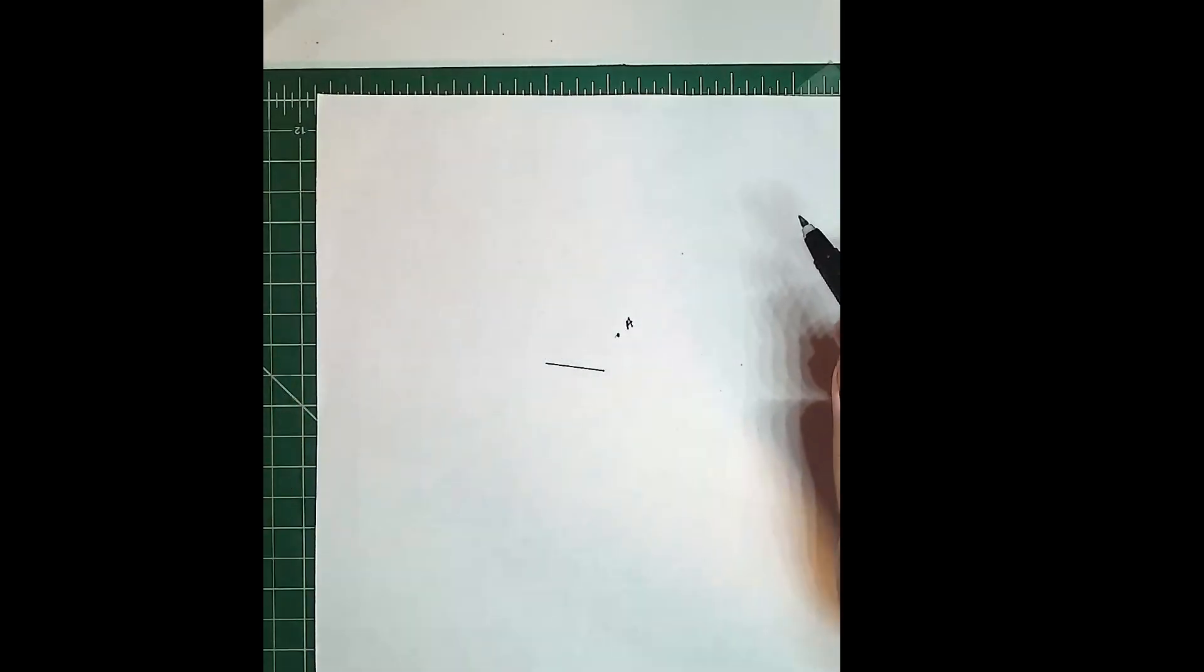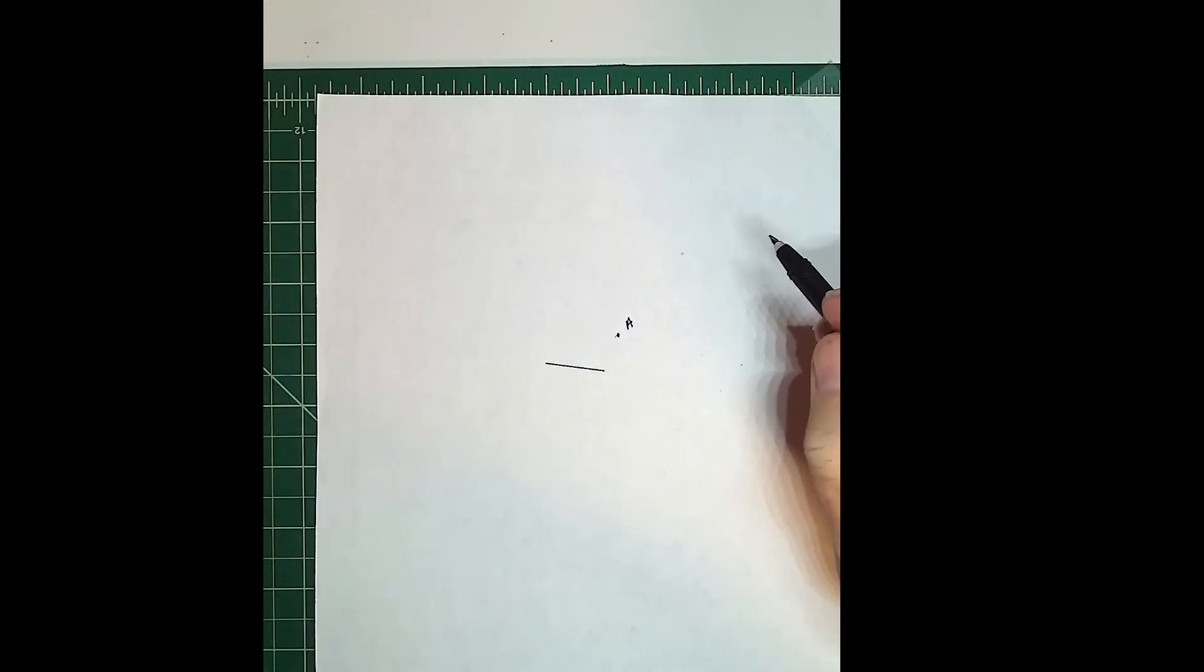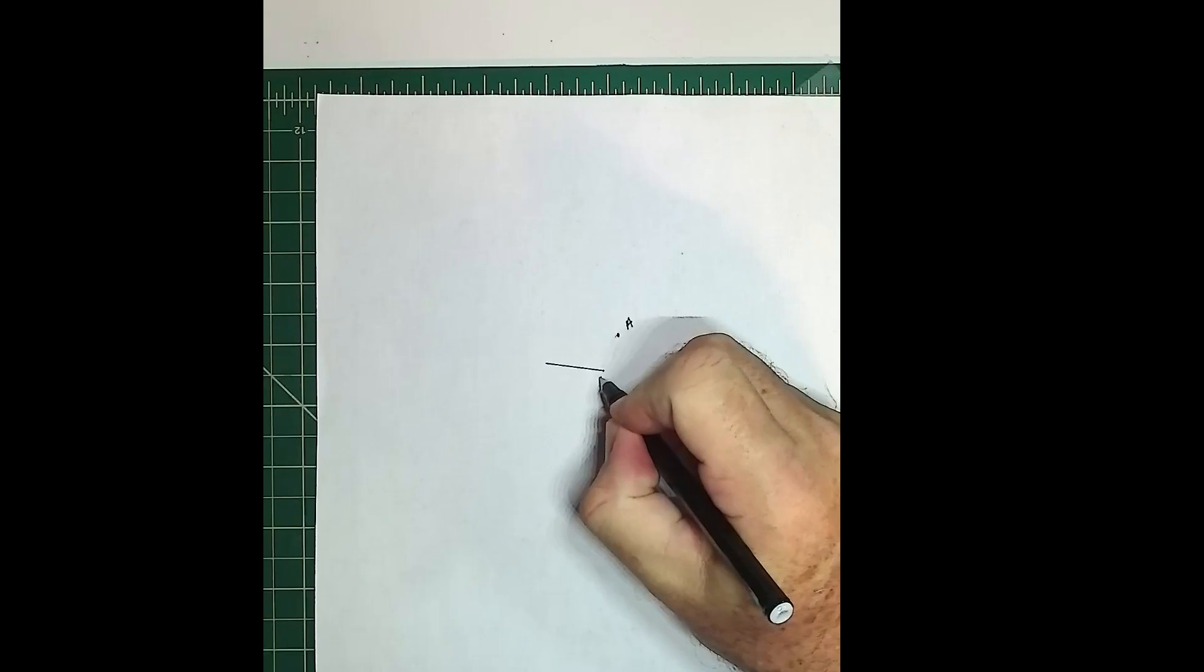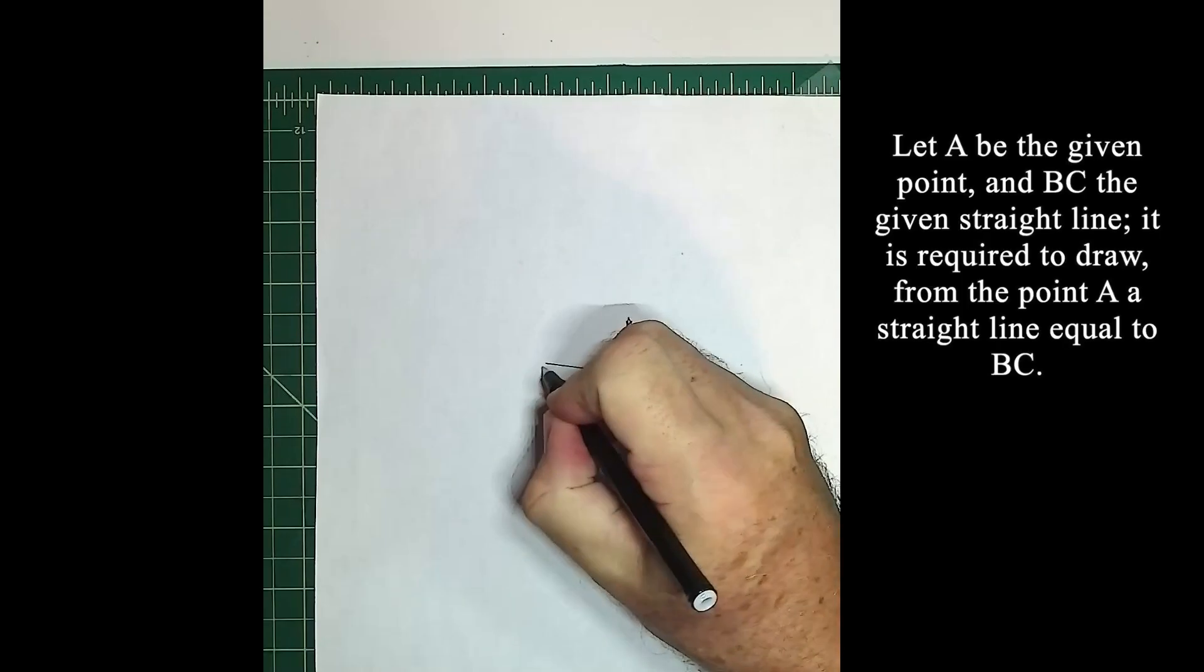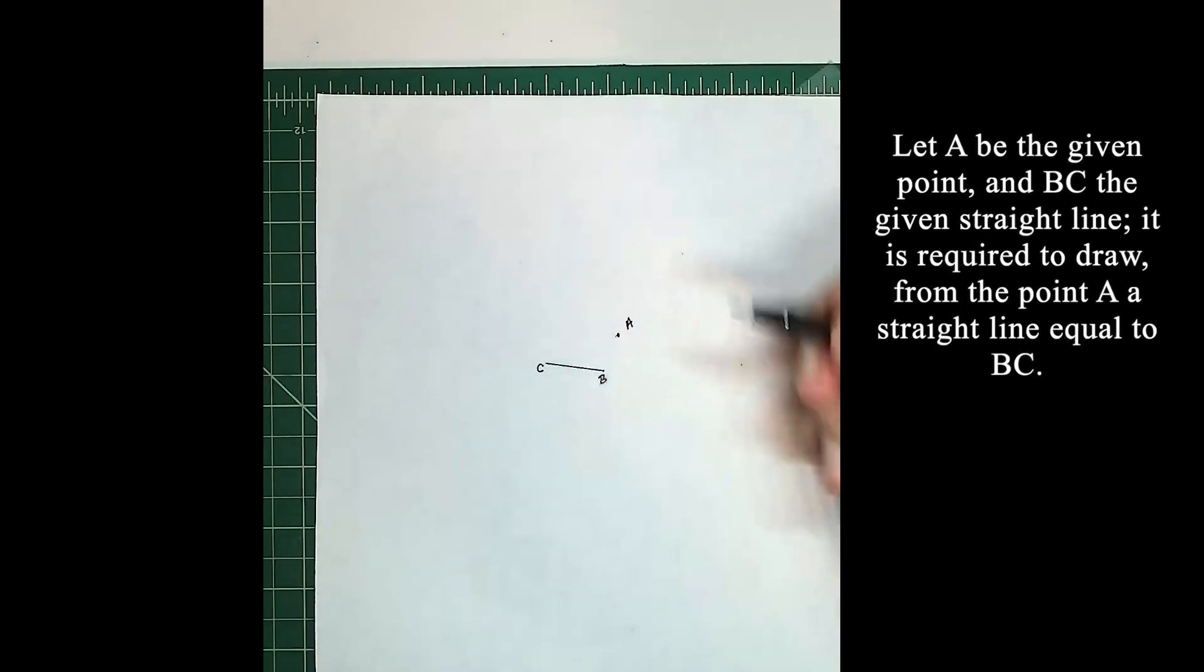There we go, we're going to label this line BC. Now we're going to start reading and it's going to tell us exactly to do that. Let A be the given point and BC the given straight line. It is required to draw from the point A a straight line equal to BC.